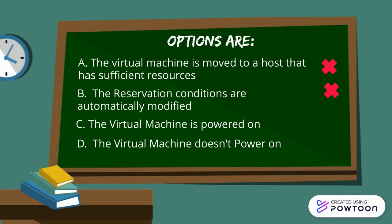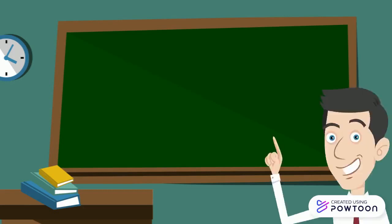Option C: The virtual machine is powered on — that is also a wrong answer, because the virtual machine will not be powered on if conditions are not met. And as we discussed, the right answer is D: the virtual machine will not power on if the reservation conditions are not met.